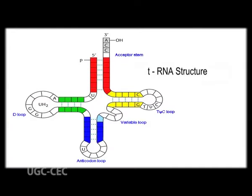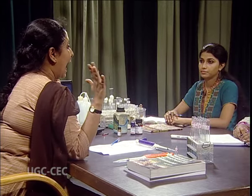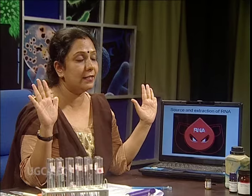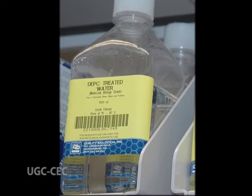This is the secondary cloverleaf structure of tRNA. Before going into RNA quantification details, you have to know the source and extraction method of RNA. As RNA is unanimously present in all living organisms, you can choose any biological source for RNA extraction. But you have to remember about RNase contamination, because our hands are also contaminated with RNase. To avoid RNA contamination, you have to use DEPC — diethylpyrocarbonate — treated water.